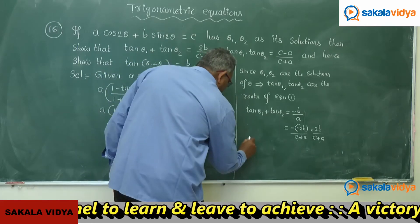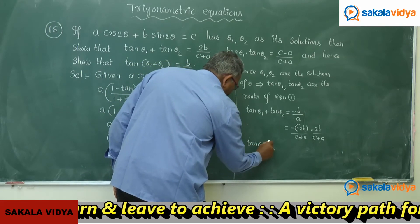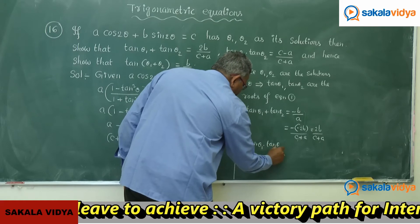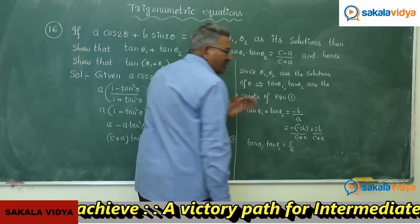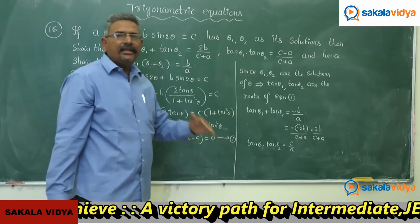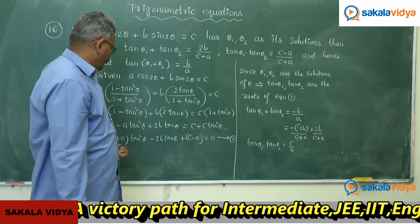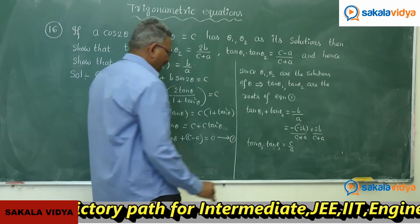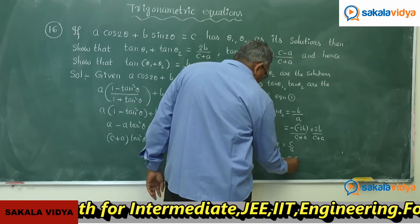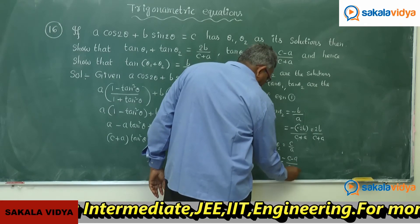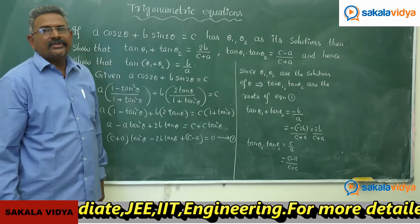Now tan θ₁ · tan θ₂ equals the product of roots, which in general equals the constant term divided by the coefficient of tan²θ. So that means we have (c−a)/(c+a).